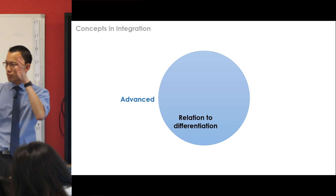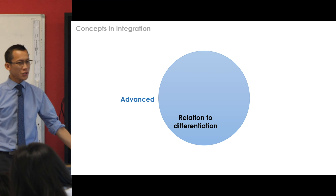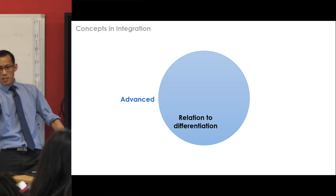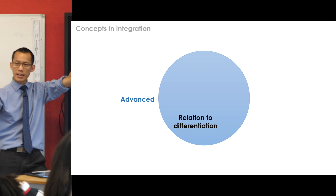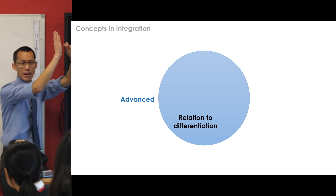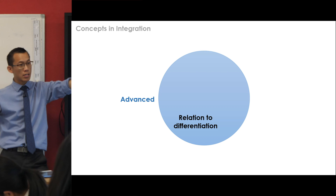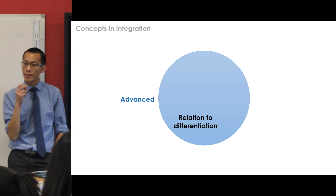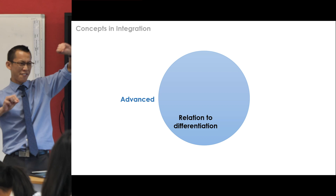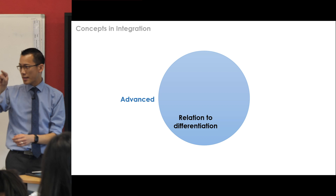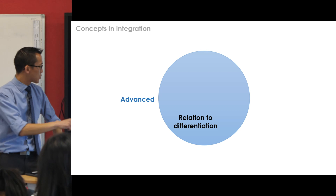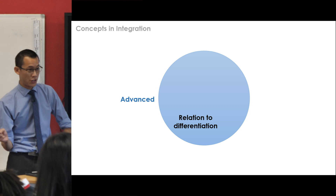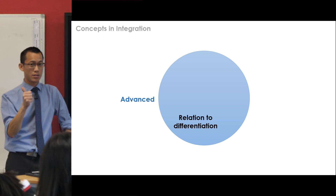What does the derivative tell you in terms of change? It tells you gradient — but more than gradient. Gradient back in coordinate geometry days was: you got one spot where you started and one spot where you ended, and gradient was the rate of change — rise over run over this interval. What was more powerful about differentiation? Instantaneous gradient. It's not an average over some amount of time or space — it's at this particular point. So differentiation gives us an instantaneous rate of change.